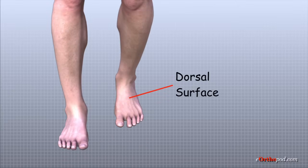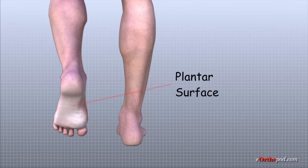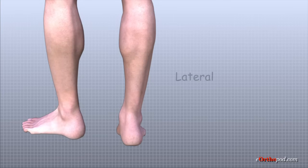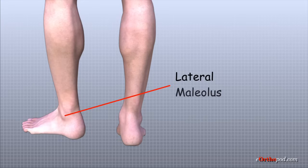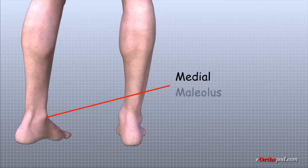The top of the foot is referred to as the dorsal surface. The sole of the foot is the plantar surface. The outside of the ankle is referred to as the lateral side, and the bony bump on the lateral side is called the lateral malleolus. The inside of the ankle is referred to as the medial side, and the bony bump on the medial side is called the medial malleolus.